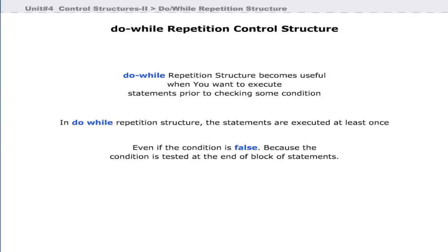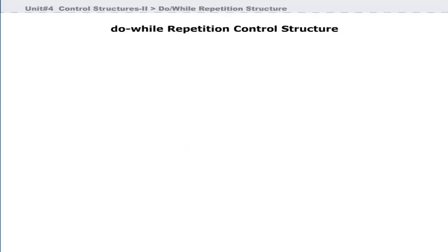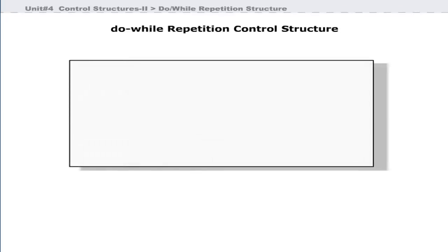The general form of the do-while loop is the do keyword followed by a set of curly braces that contain one or more statements. After this block of curly braces, the while keyword and the condition are written. Let us see a simple example that demonstrates the use of do-while.